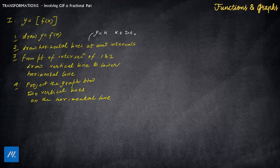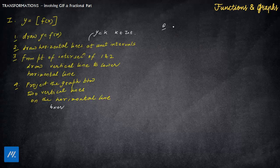For example, y = 0, y = 1, y = −1, and so on. From the point of intersection of the curve and the horizontal lines, draw vertical lines down to the lower horizontal line, then project the graph between the two vertical lines onto that lower horizontal line. I am sure most of you would not have understood what I am talking about, so let's take an example to understand this concept.